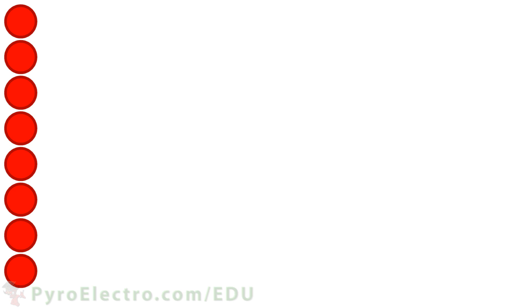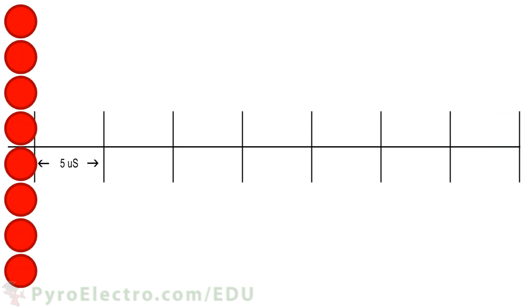Here we can see the swipe motion one more time. But what do you suppose would show up if we controlled each LED individually? Well, instead of a blur, we could actually show a picture or even spell out a message like this.